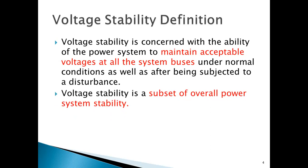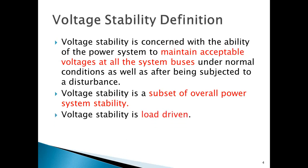Let me reflect on how power system stability is classified. Power system stability is classified into three categories: angle stability, voltage stability, and frequency stability. Thus, voltage stability is a subset of overall power system stability. As power system loads are the driving factor for voltage stability, voltage stability can also be called load stability.